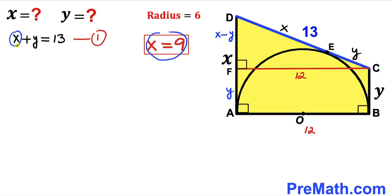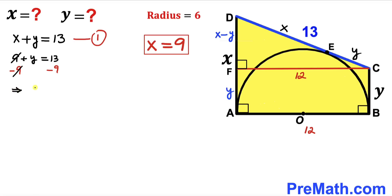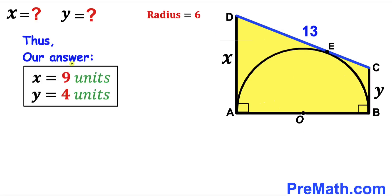Substituting X = 9 into equation 1: 9 + Y = 13. Subtracting 9 from both sides, our Y value turns out to be 4 units. So our final answers are: X equals 9 units and Y equals 4 units — meaning side AD is 9 units and side BC is 4 units.